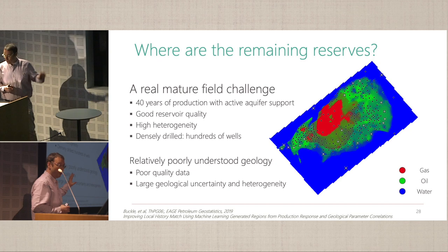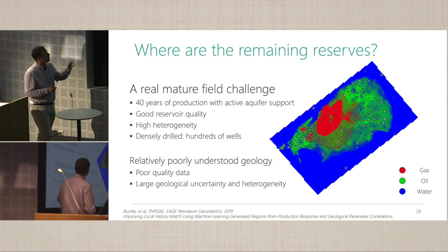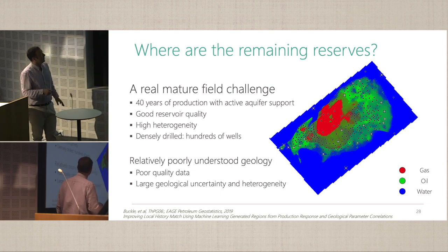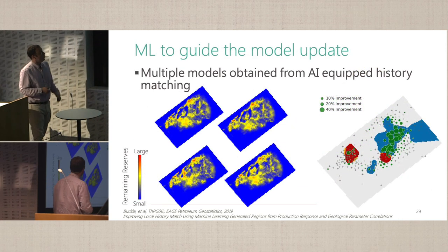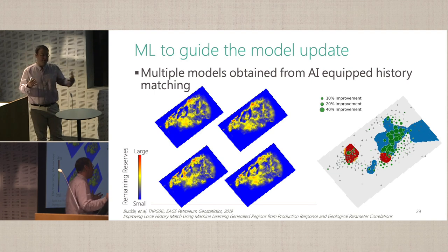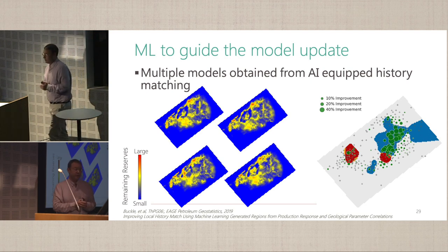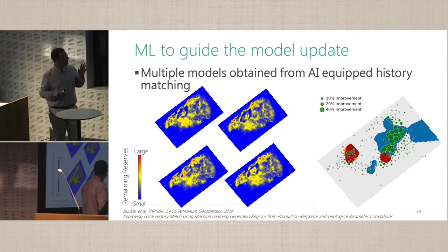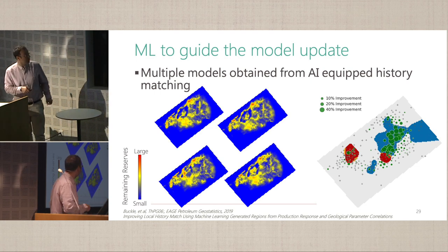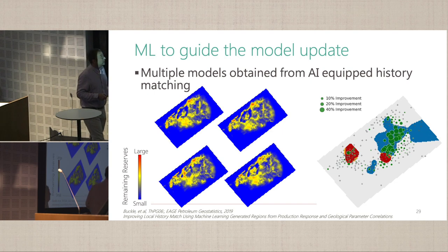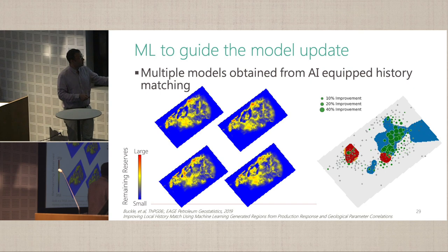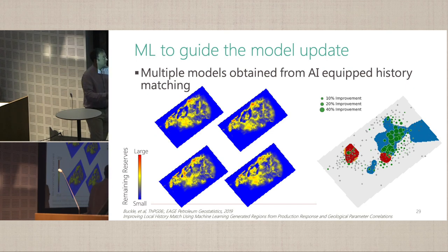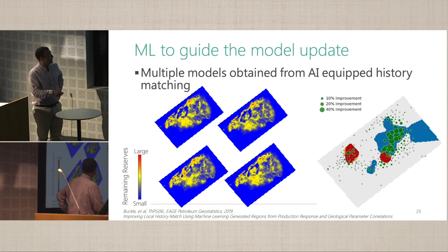The final example is a mature field case study where we try to predict remaining reserves. It's quite uncertain geology with a very good quality reservoir. We created an ensemble of models exploring the uncertain parameterization — the range of geological parameters — but there will always be something missing in our model description. We used data analytics to elicit what is missing locally in our model parameterization.